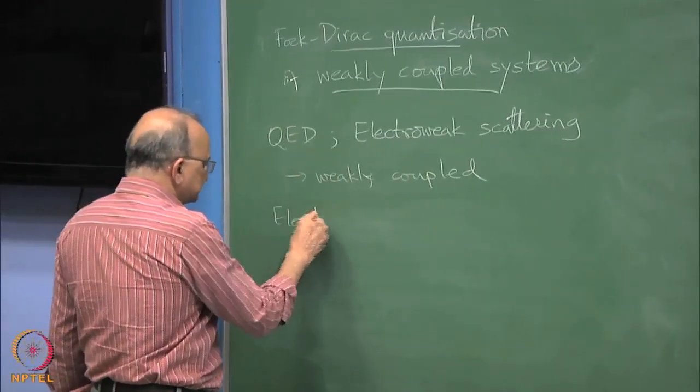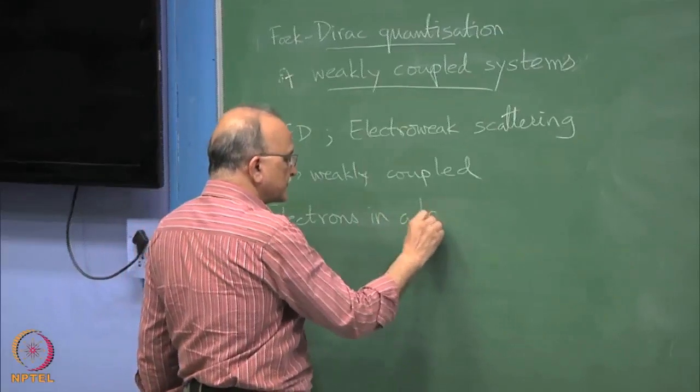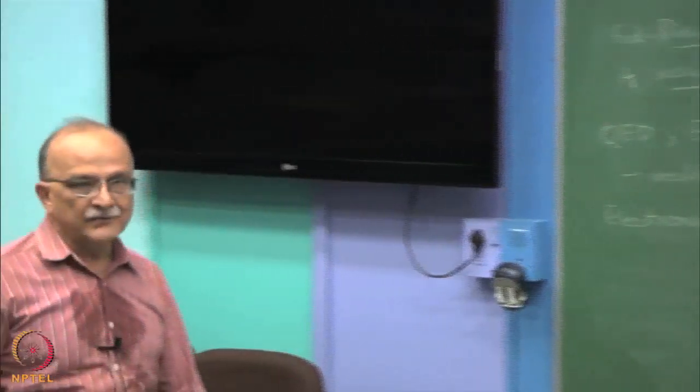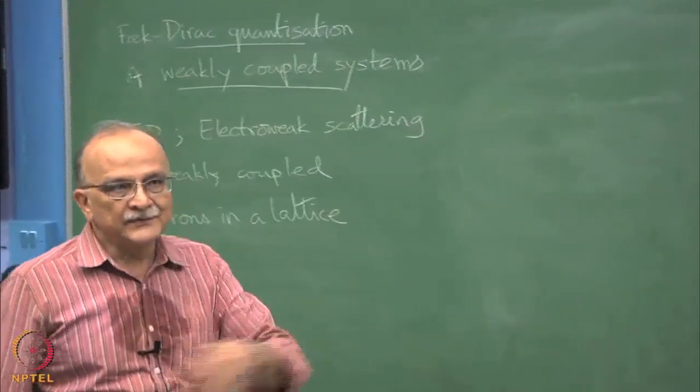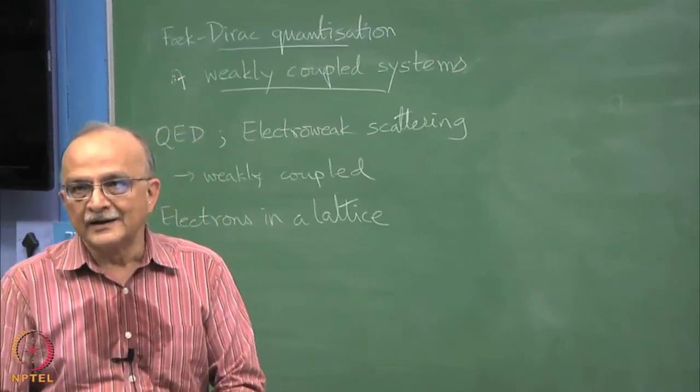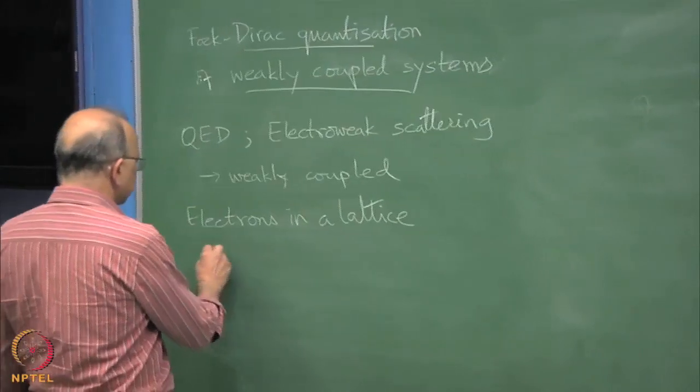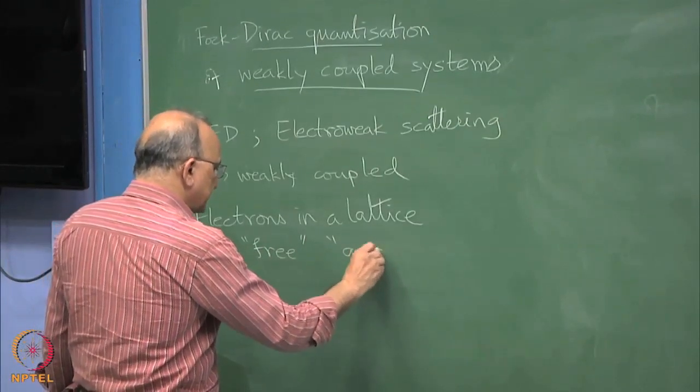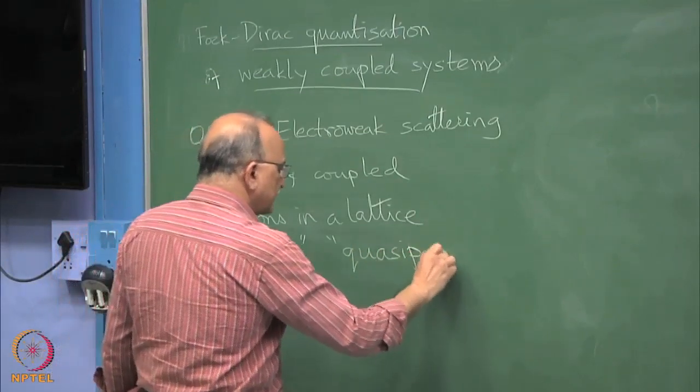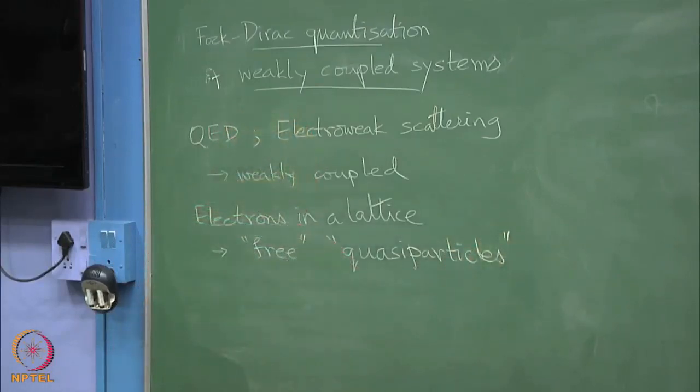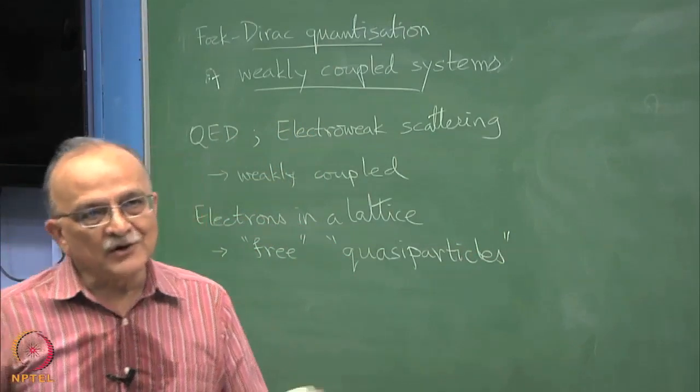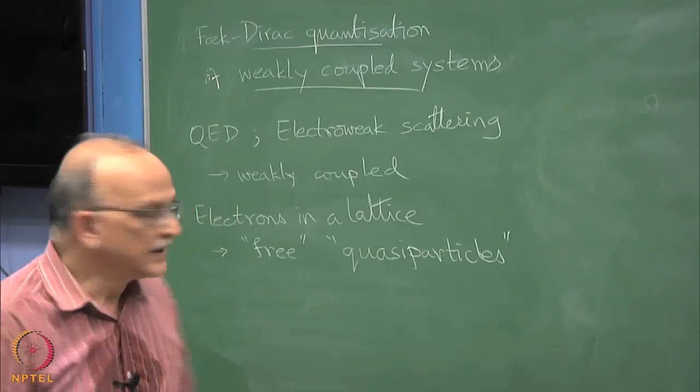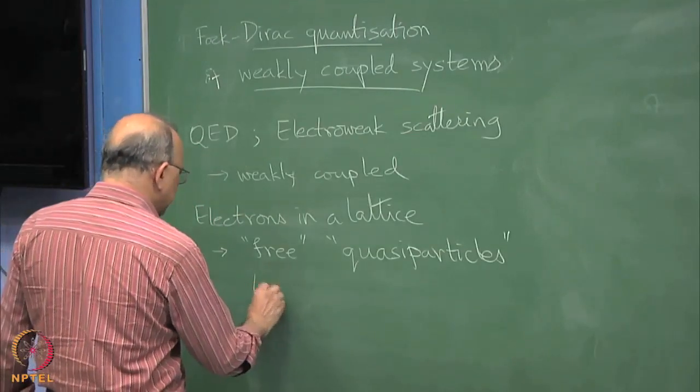Electrons in a lattice miraculously display this weakly coupled kind of phenomenon because you can think of them as free gas of fermions in the lattice but that they are really quasi particles. Both terms should be put in separate, so you can continue to think as if there are electrons floating in the lattice but actually it is a much more complicated situation to which in the situations where you are lucky you have that description available. We are often called the Landau liquid, Landau Fermi liquid.